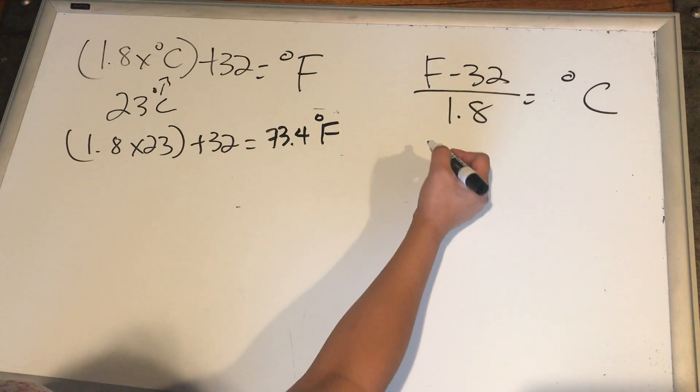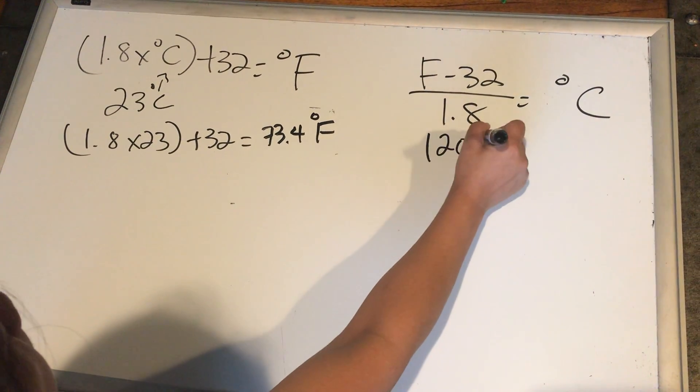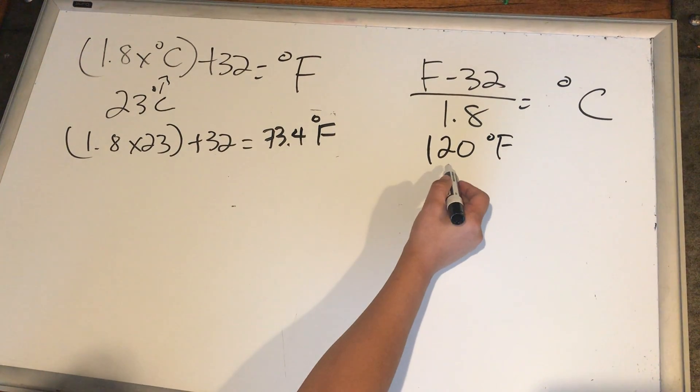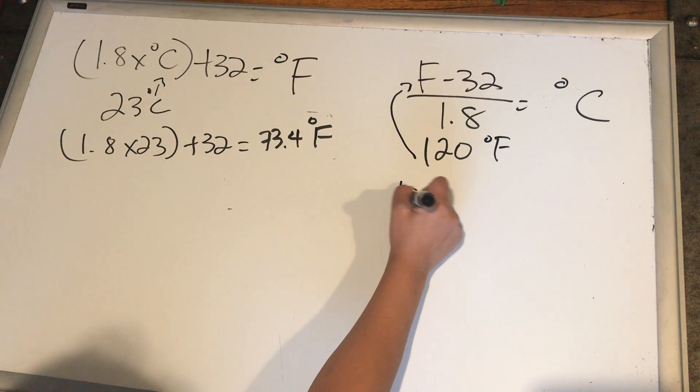With this one here, let's try 120 Fahrenheit. And we just plug in that 120 here. So 120 minus 32 equals sign. So 120 minus 32 is 88. Then you divide it by 1.8. And you put your answer in the tenth place, so it's 48.9 Celsius.